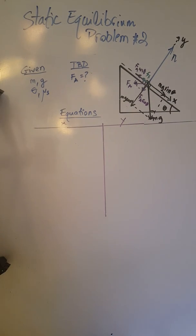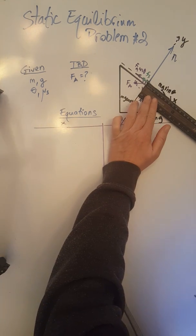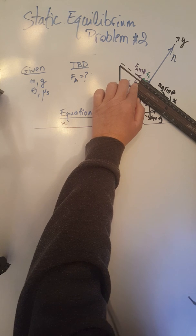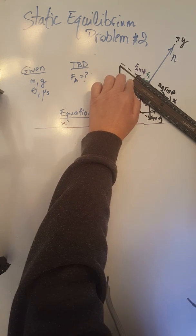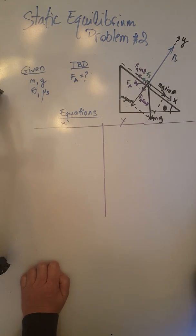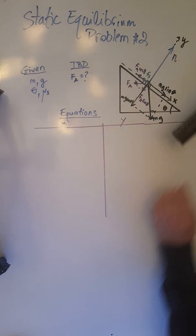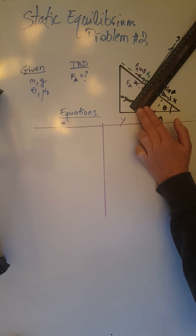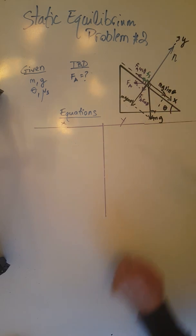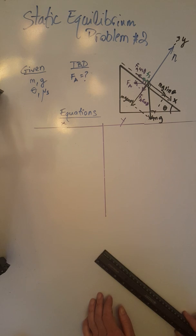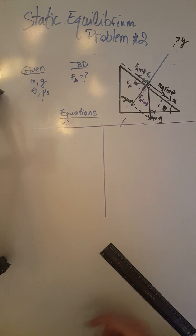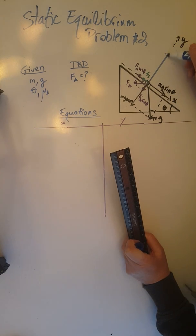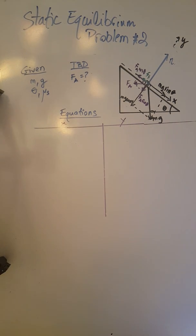Let's do a quick magnitude check. mg sine theta is 5 cm, which must equal F_s plus F_a cosine theta. F_s is 1.5 and F_a cosine theta is 3.5, so 3.5 plus 1.5 equals 5 — we're good. On the y-axis, the normal force drawn at 9 cm must equal mg cosine theta at 5.5 cm plus F_a sine theta at 1.5 cm, giving 7. So the normal force is too long and we shorten it by 2 cm to 7 cm.